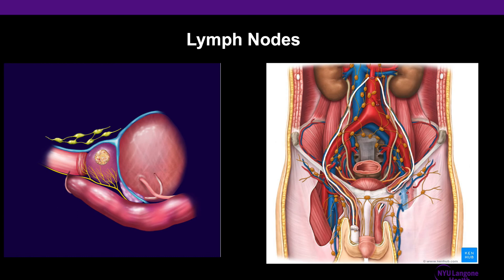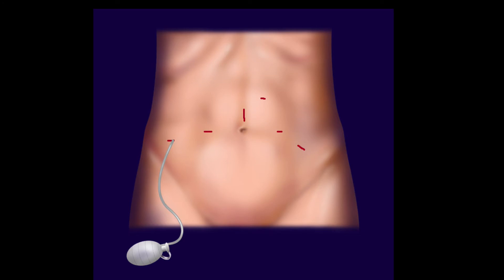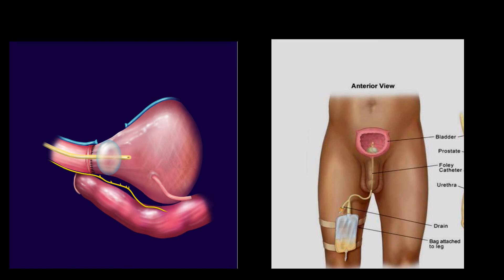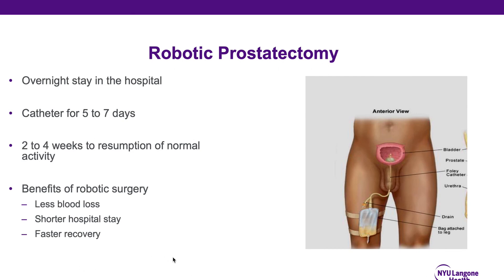As previously mentioned, depending on the aggressiveness and the stage of the cancer, the lymph nodes located in the pelvis near the prostate may also be removed with the prostate during radical prostatectomy. Finally, a drain may be left in place at the conclusion of the procedure; however, this drain is frequently removed prior to discharge from the hospital. Patients are discharged from the hospital with the Foley catheter in place and return to the office for removal of the catheter. Robotic radical prostatectomy typically involves an overnight stay, and the catheter is left in place for approximately five to seven days.